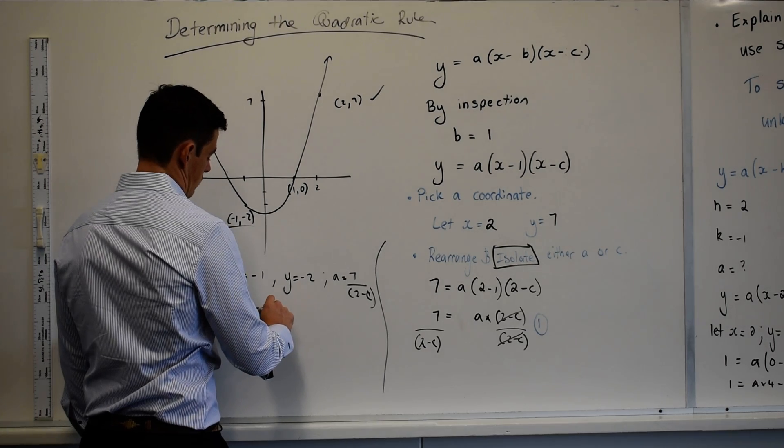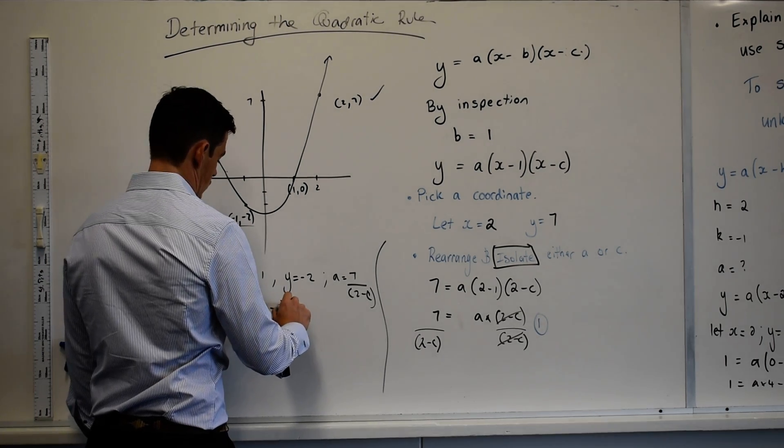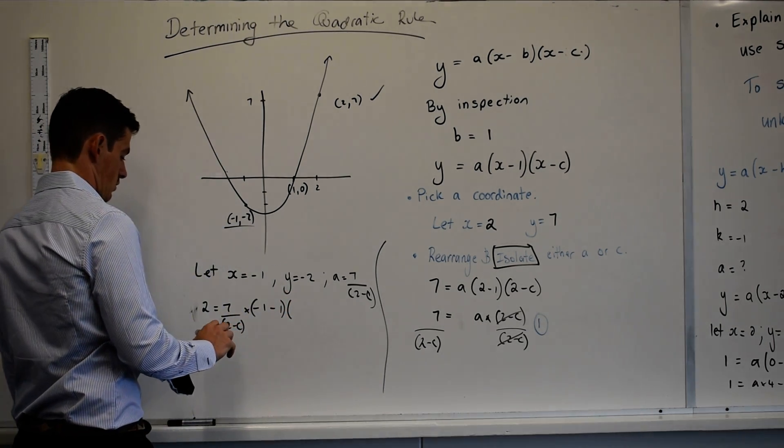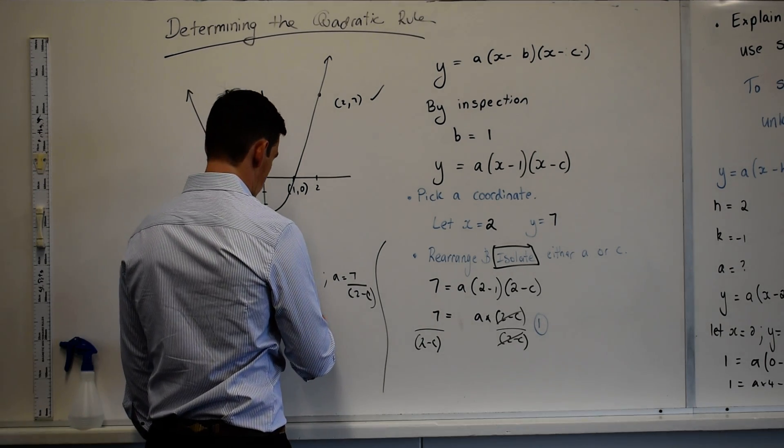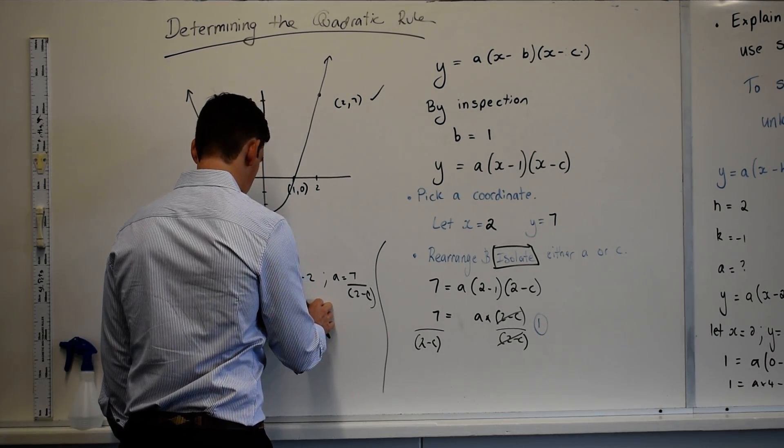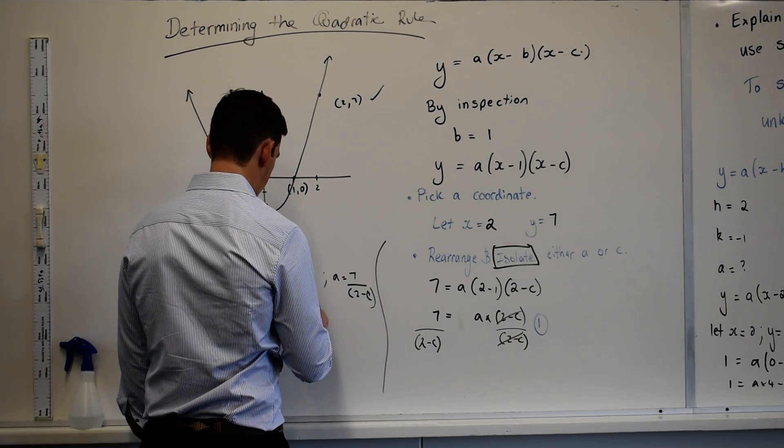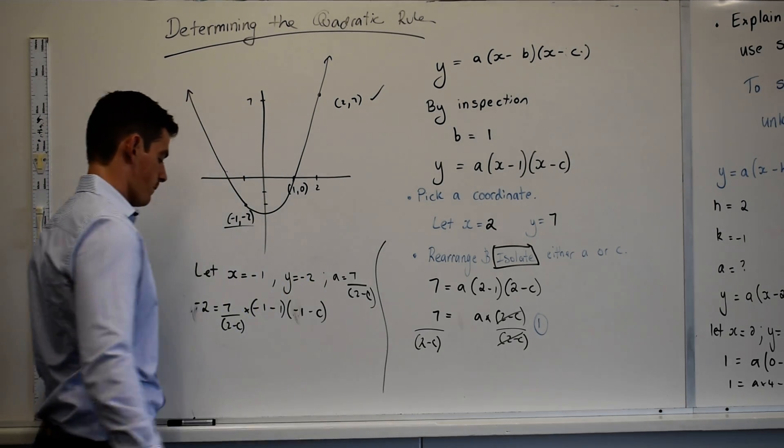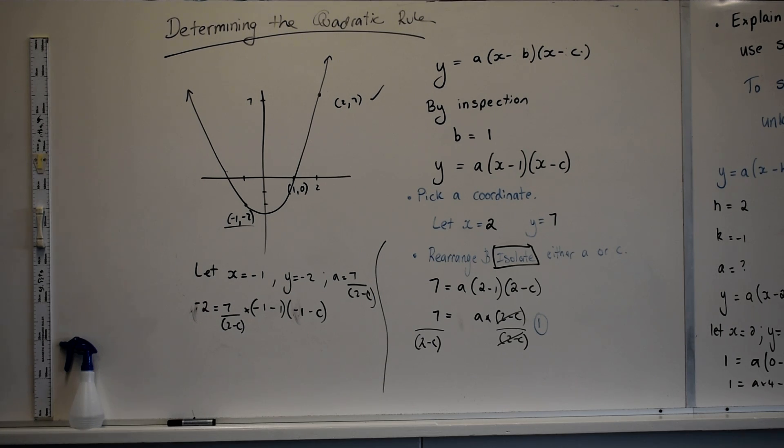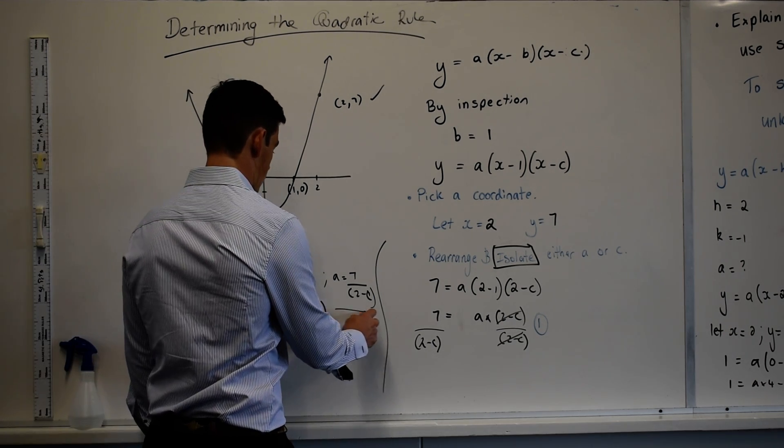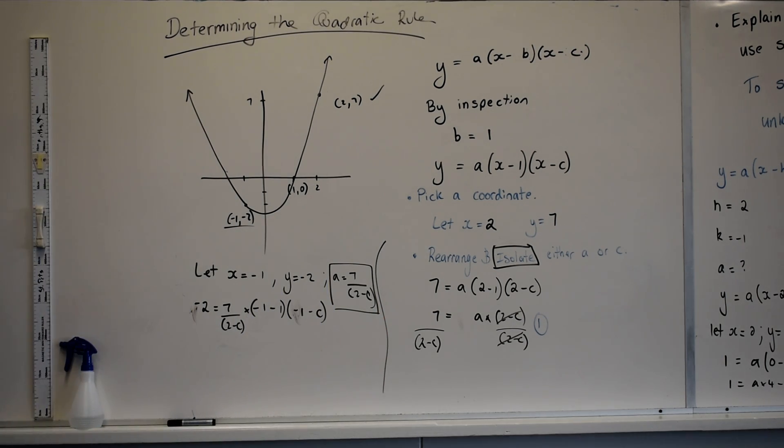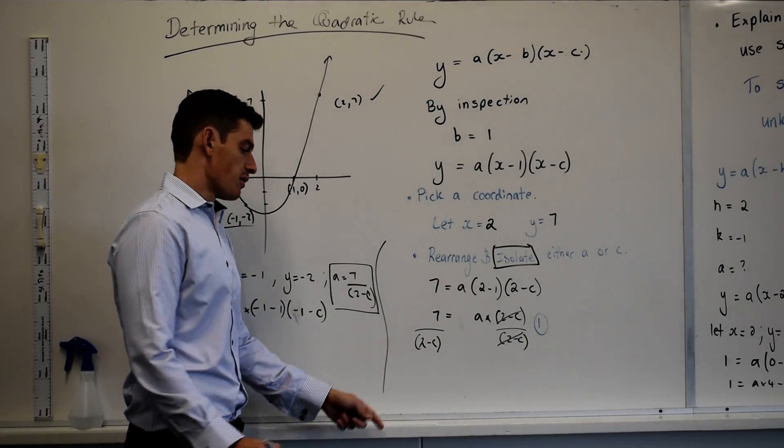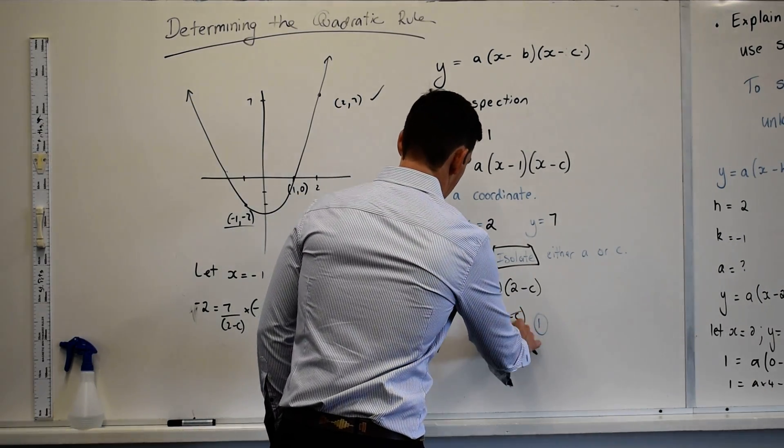negative 1 minus 1 it is negative 2 thank you negative 2 negative 1 minus C. Where'd the A go? Because A equals that, isn't it? That's my last line working, A equals that.